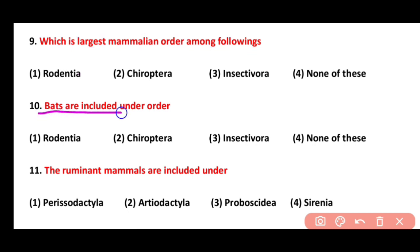Question 10. Bats are included under which order? Rodentia, Chiroptera, Insectivora, or None of these. Correct answer is option 2. Bats are included in order Chiroptera, and they have cosmopolitan distribution but are most abundant in tropical regions.